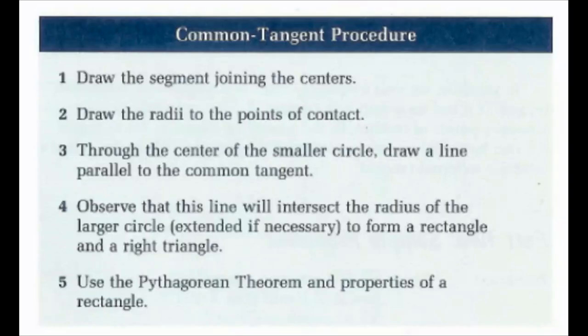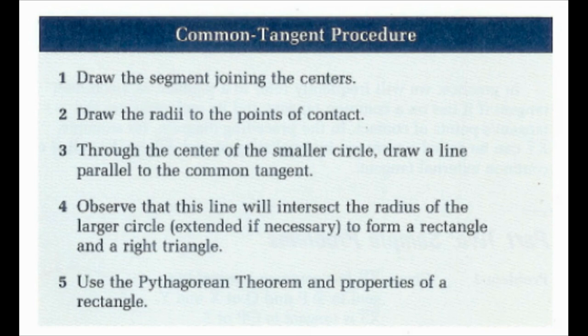There is a common tangent procedure to follow: first, draw the segment joining the centers; then draw the radii to the points of contact; through the center of the smaller circle, draw a line parallel to the common tangent; observe that this line intersects the radius of the larger circle. Form a rectangle and a right triangle, then use the Pythagorean theorem and properties of a rectangle to find the length of the tangent.